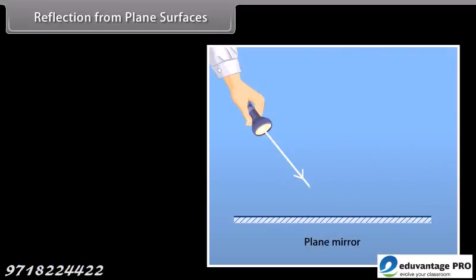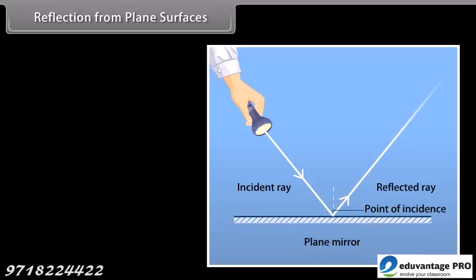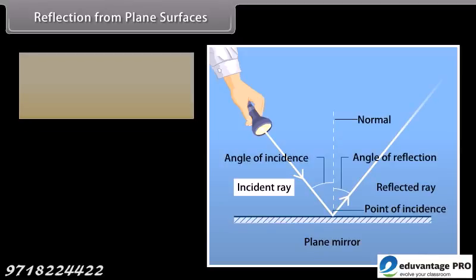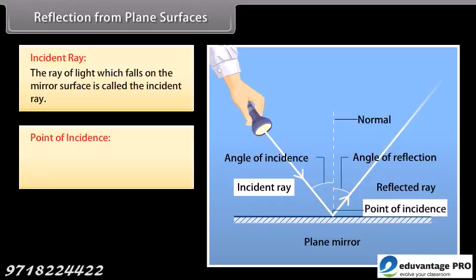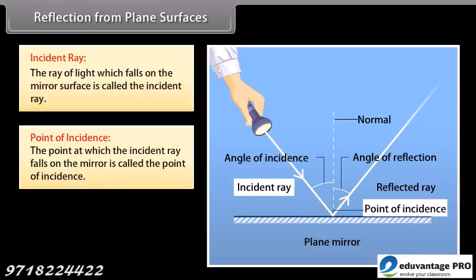Meaning of important terms are as follows. Incident ray: the ray of light which falls on the mirror surface is called the incident ray. Point of incidence: the point at which the incident ray falls on the mirror is called the point of incidence.